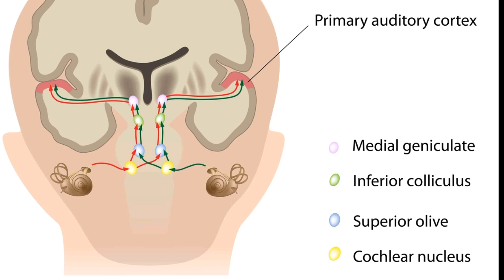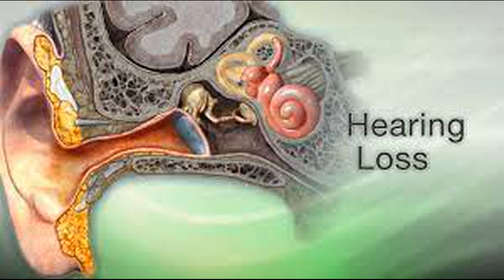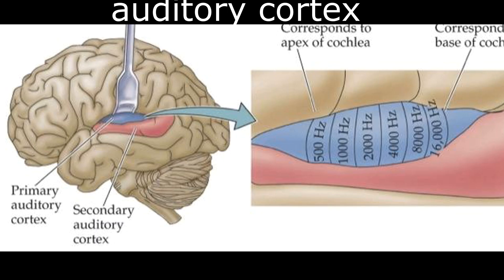The auditory cortex is a specialized area of the brain responsible for processing and interpreting incoming auditory information. It deciphers the signals, allowing us to recognize and understand different sounds. Lesions or damage along this pathway can lead to various hearing impairments. For example, damage to the auditory nerve can result in deafness, where the transmission of sound signals is completely disrupted. Damage to the auditory cortex can impair our ability to understand speech or localize sounds, significantly affecting communication and quality of life.